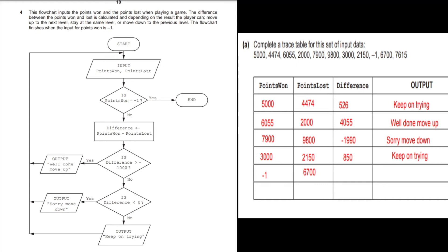The next input data set is points won 6055 and points lost 2000. Is points won equal to minus 1? No. Difference is 6055 minus 2000, which is 4055. Is difference greater than or equal to 1000? Yes — it is greater than 1000. So we output: well done, move up.